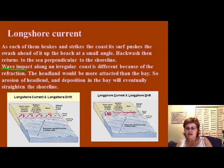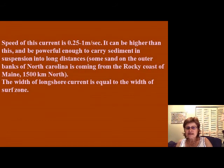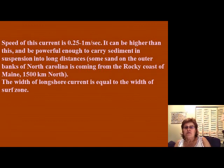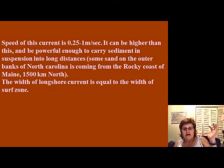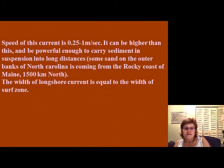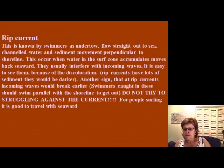How fast is the longshore current moving? It's about 0.25 to 1 meter per second — a meter is about 3 feet, so roughly 1 to 3 feet per second. It can be faster and powerful enough to carry sediment, like on the east coast all the way from Maine down to North Carolina. The width of the longshore current is equal to the surf zone.